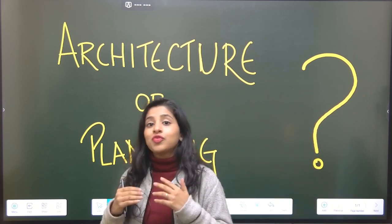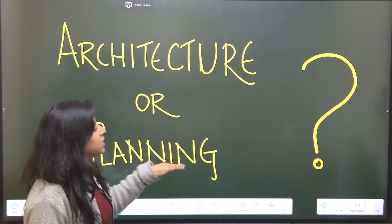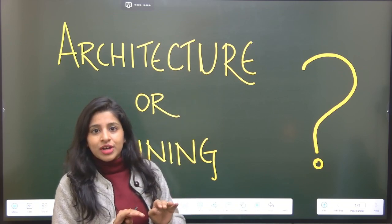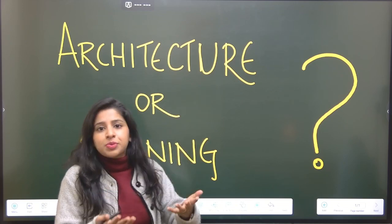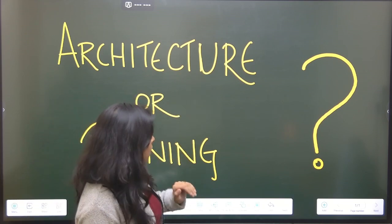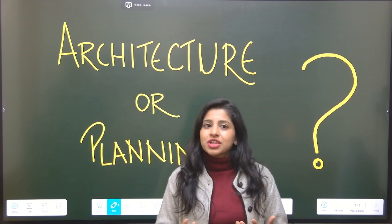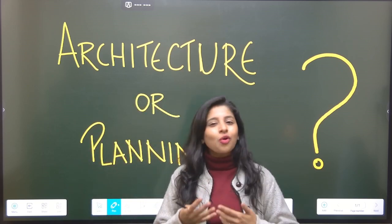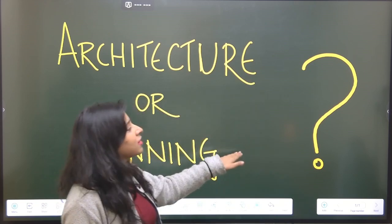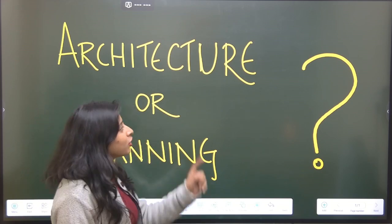Now, what we always suggest is study for both these parts. There are a lot of subjects which actually overlap. It's like half-half. In transportation, half of it is in architecture, half of it is in planning. Urban housing, half of it is in architecture, half of it is in planning. The subjects are such that you cannot segregate and read. These are all overlapping things. You have to study everything. So what we suggest is prepare for the entire thing so that you have that advantage in the examination hall whereby you can do that selection.